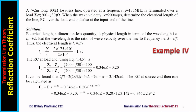Another problem: a 2-meter long, 100-ohm lossless line operated at 175 MHz, terminated over a load of 200 − j30 ohms, with wave velocity 200 meters per microsecond. Determine the electrical length of the line, the RC over the load, and at the input end. Electrical length is a dimensionless quantity — it is the physical length in terms of wavelengths, i.e., L divided by lambda. Since lambda = v/f, the electrical length becomes L·f/v. Substituting the known values gives an electrical length of 1.75.